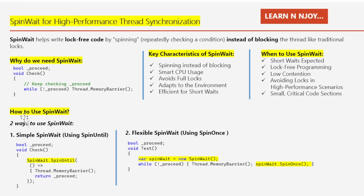Now the fun part — how to use SpinWait. There are two ways. Number one: simple SpinWait using SpinUntil. Number two: flexible SpinWait using SpinOnce. In the simple SpinWait approach, we call the static method `SpinWait.SpinUntil`, which keeps checking a condition until it becomes true.